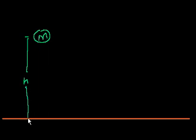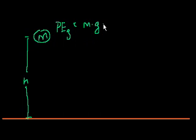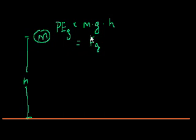or 9.8 meters per second squared, and it is h meters above the ground, then the gravitational potential energy of this object at that point is equal to the mass times the acceleration of gravity times the height. Or you could view it as the magnitude of the force of gravity times height.